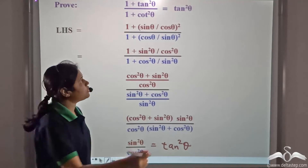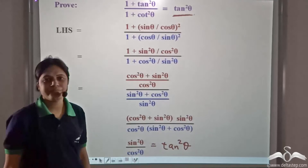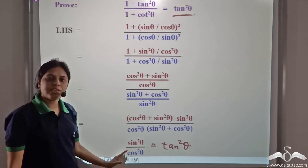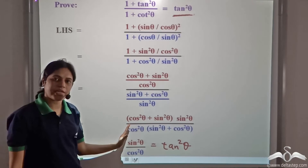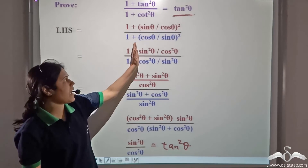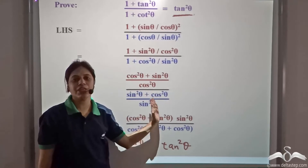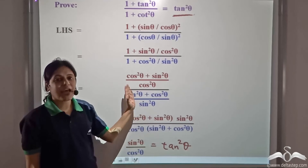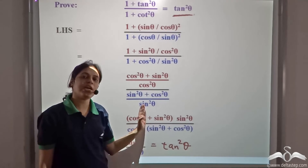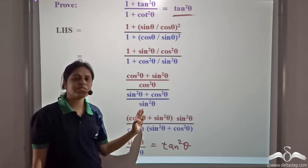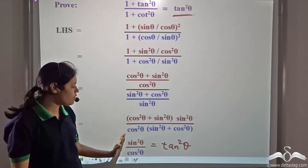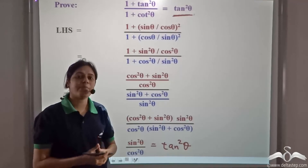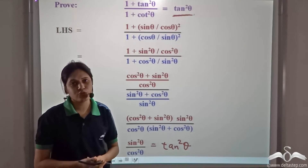Which is equal to the right hand side. So we have proved this identity without using the other trigonometric identities, by going back to sin and cos — converting everything in terms of sin and cos. But as you have seen, if we remember the trigonometric identities, it becomes a lot simpler with fewer steps. So remembering trigonometric identities is very useful.